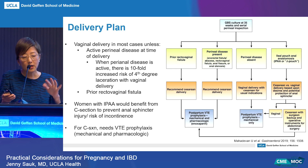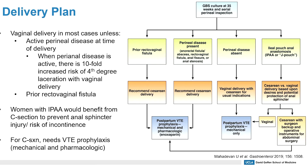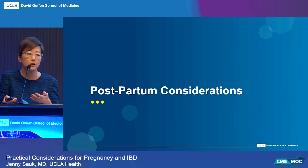For delivery plans: most patients are eligible to consider vaginal delivery. However, if there is active perianal disease, there could be a tenfold increased risk of fourth-degree lacerations with vaginal delivery. Patients with rectovaginal fistulas should not consider vaginal delivery. Patients with a pouch would probably benefit more from a C-section to prevent anal sphincter injury or the risk of incontinence. For patients who've had a C-section, we should also be thinking about venous thromboembolism prophylaxis — both mechanical and pharmacological.